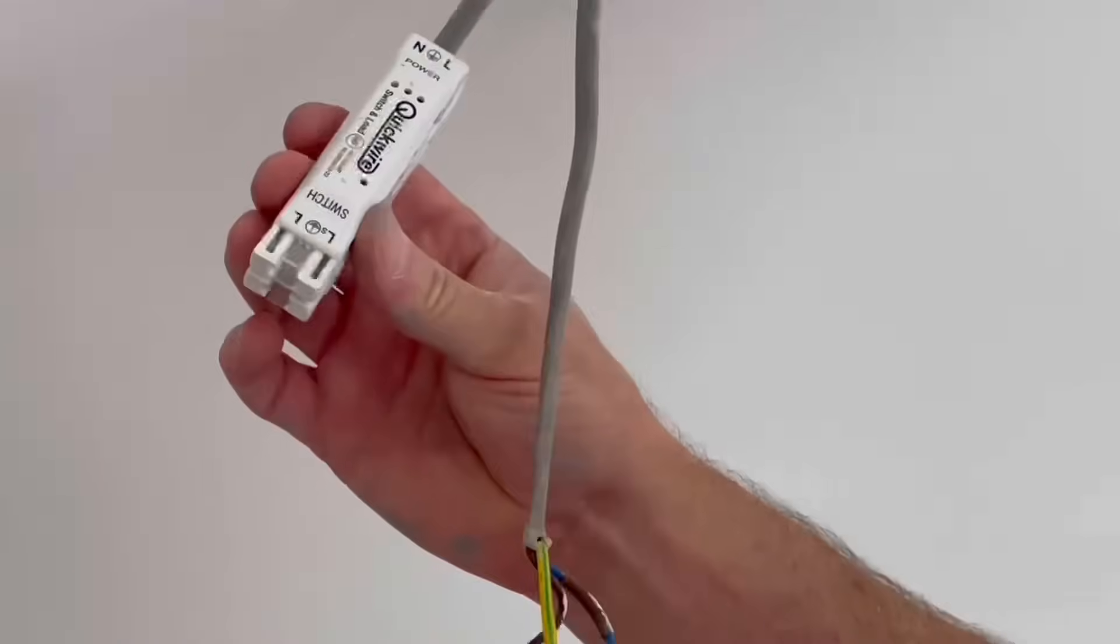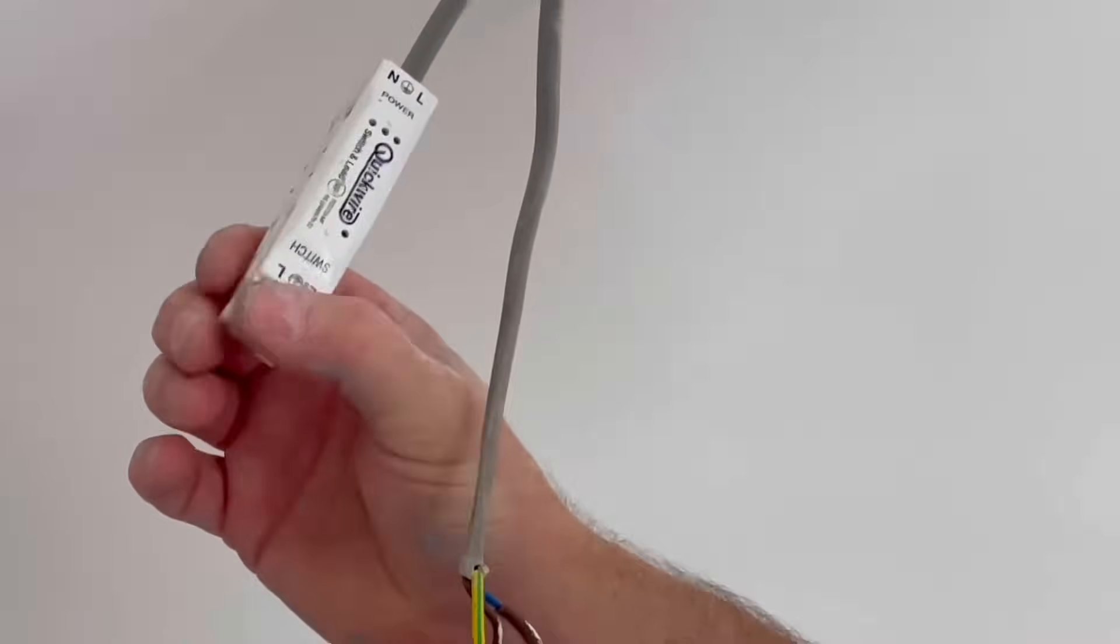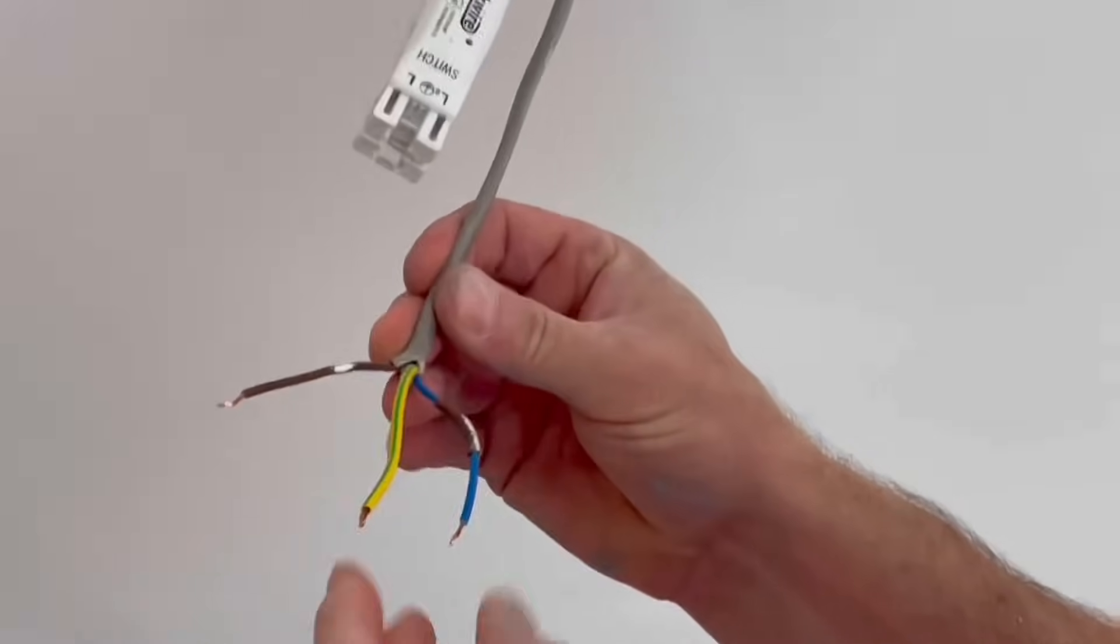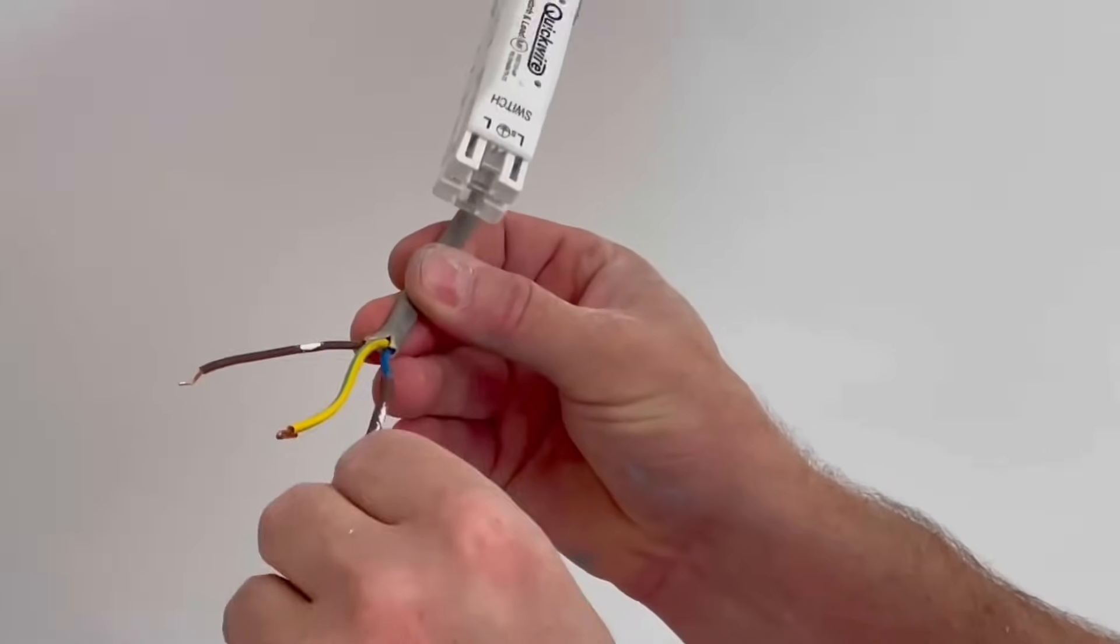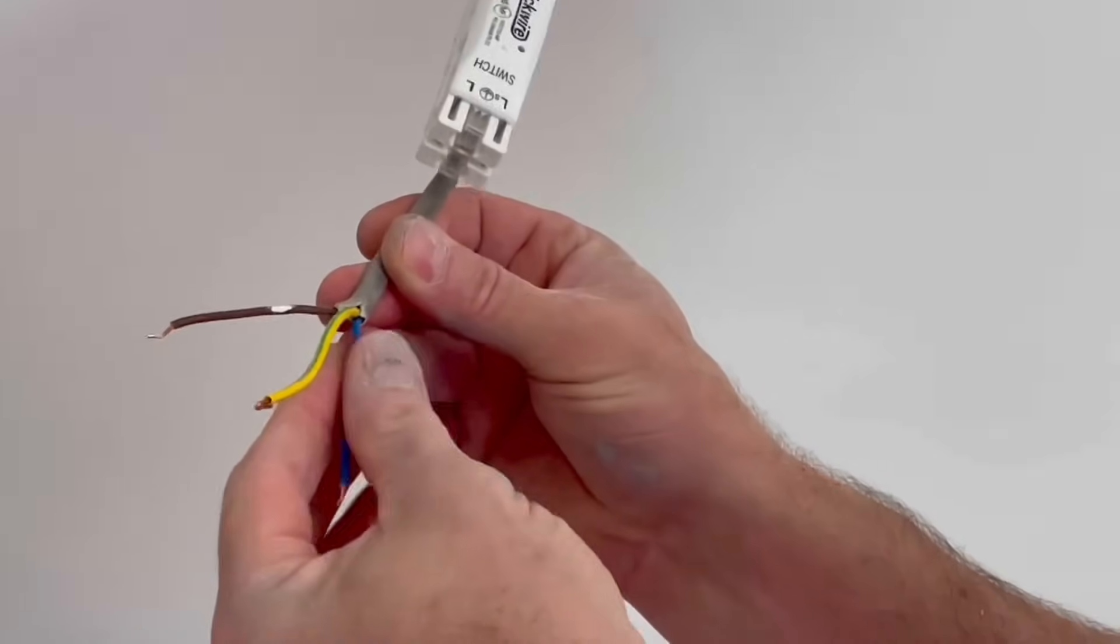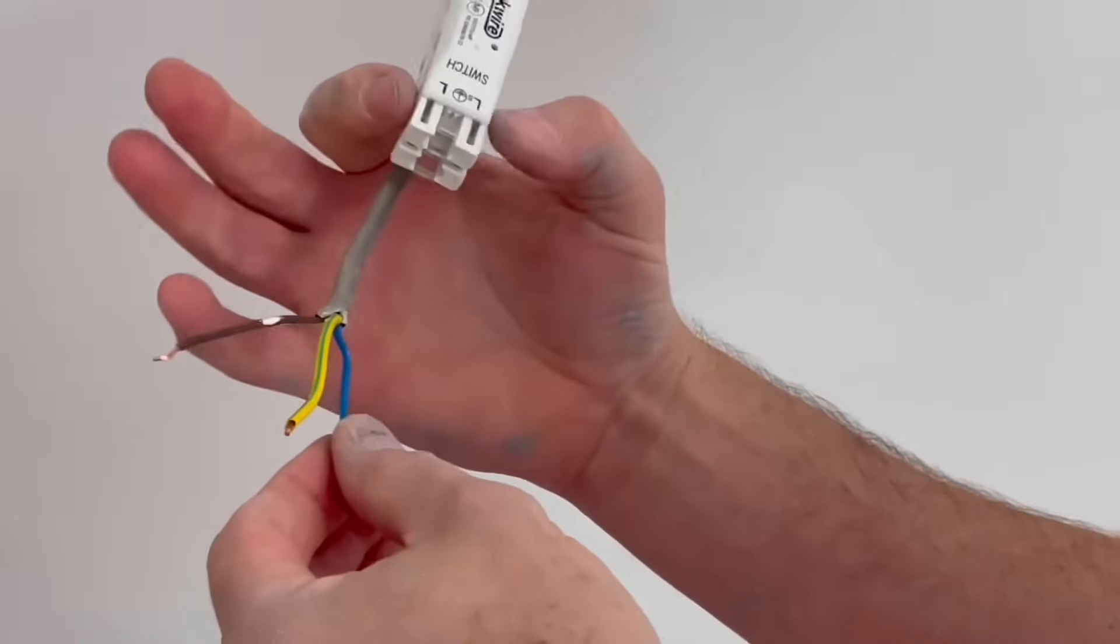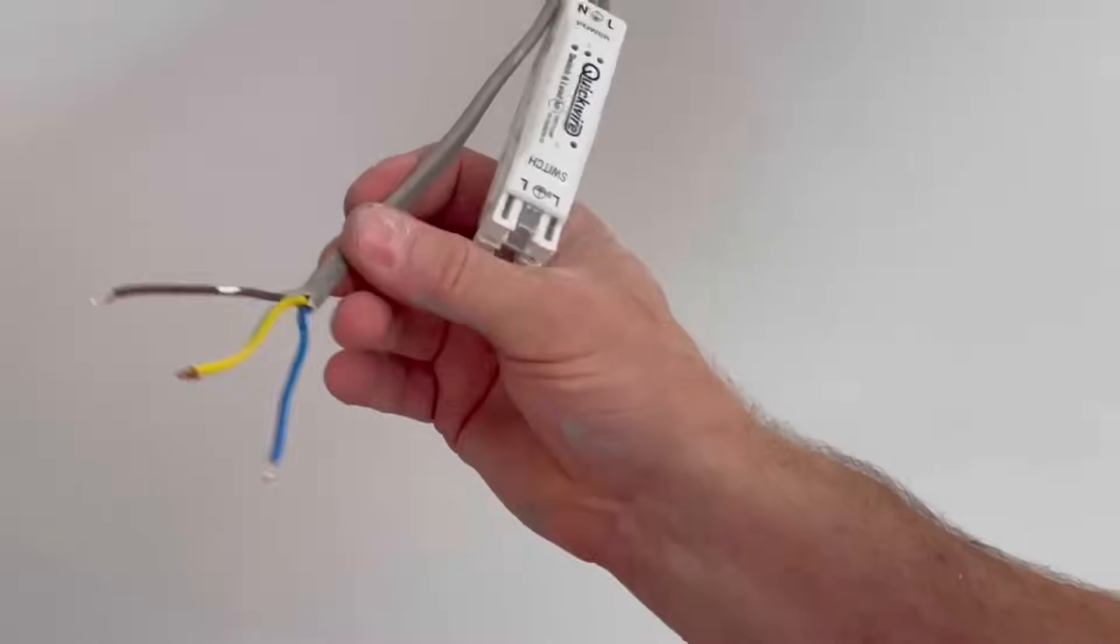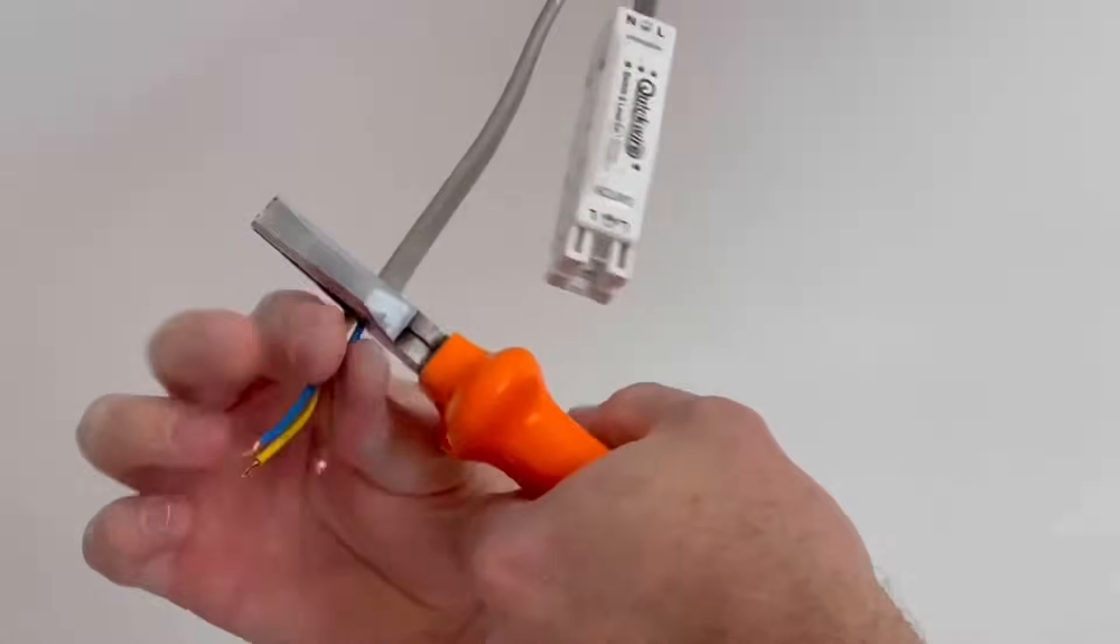So we've got the switch one now so we've got switch line, line and CPC. That's our permanent line connection and our switching line connection being one which is effectively blue with brown sleeving on it. We can take that off now because the connections are going to come into here so you won't see those. And again I'm going to cut it off and use those fantastic twin and earth strippers that I like so much.